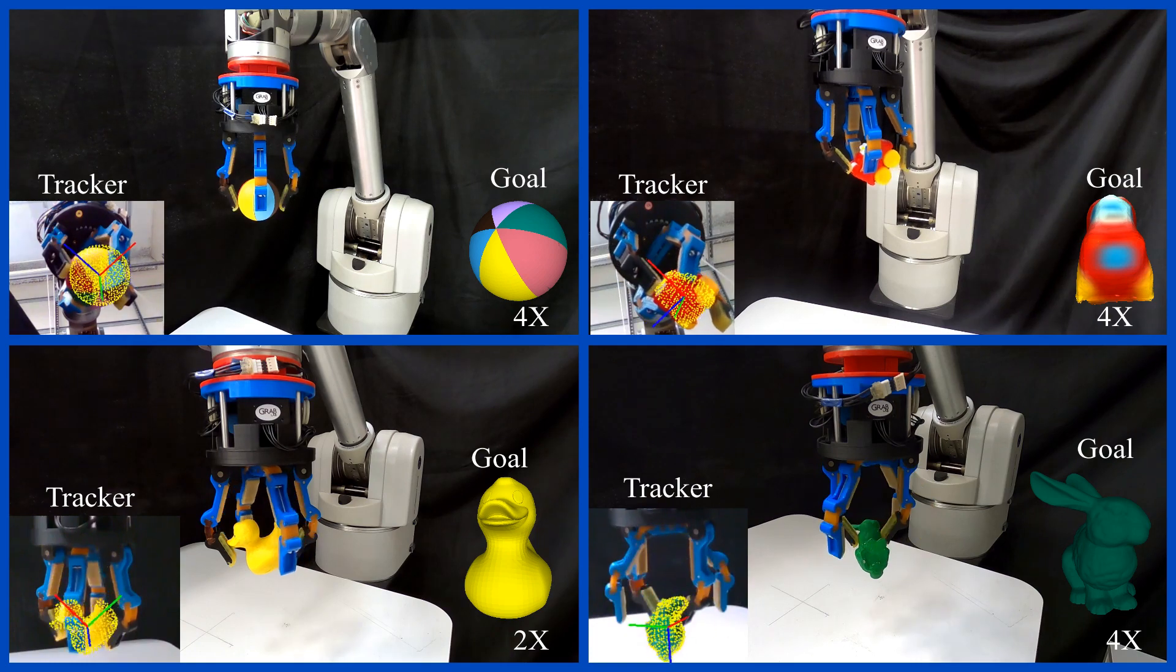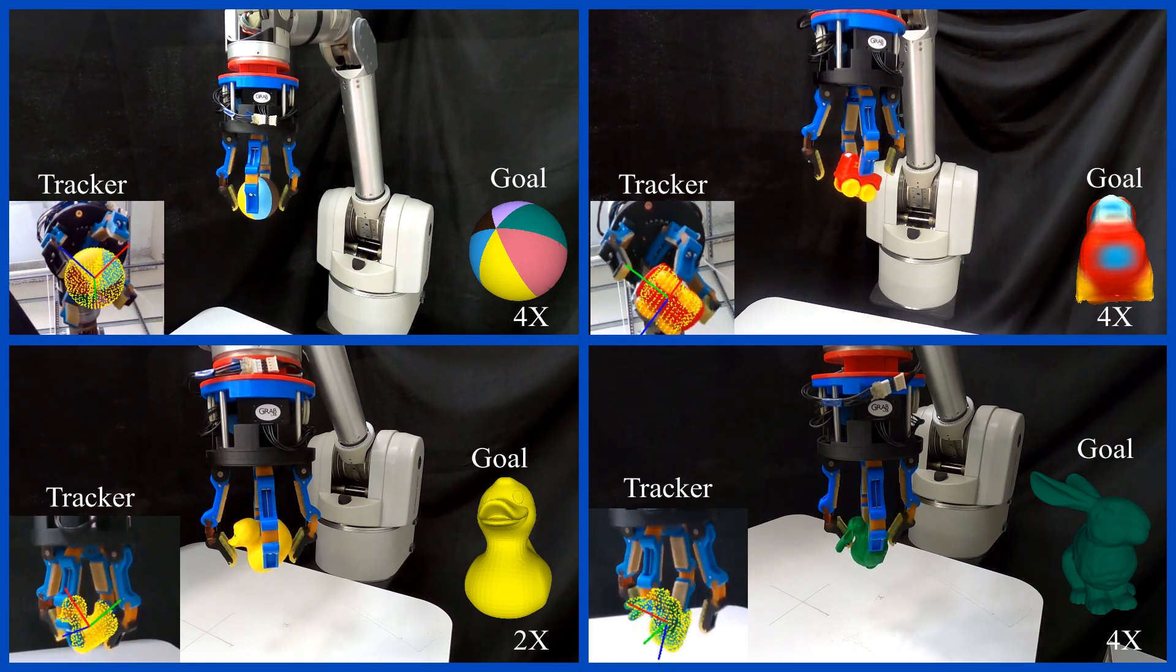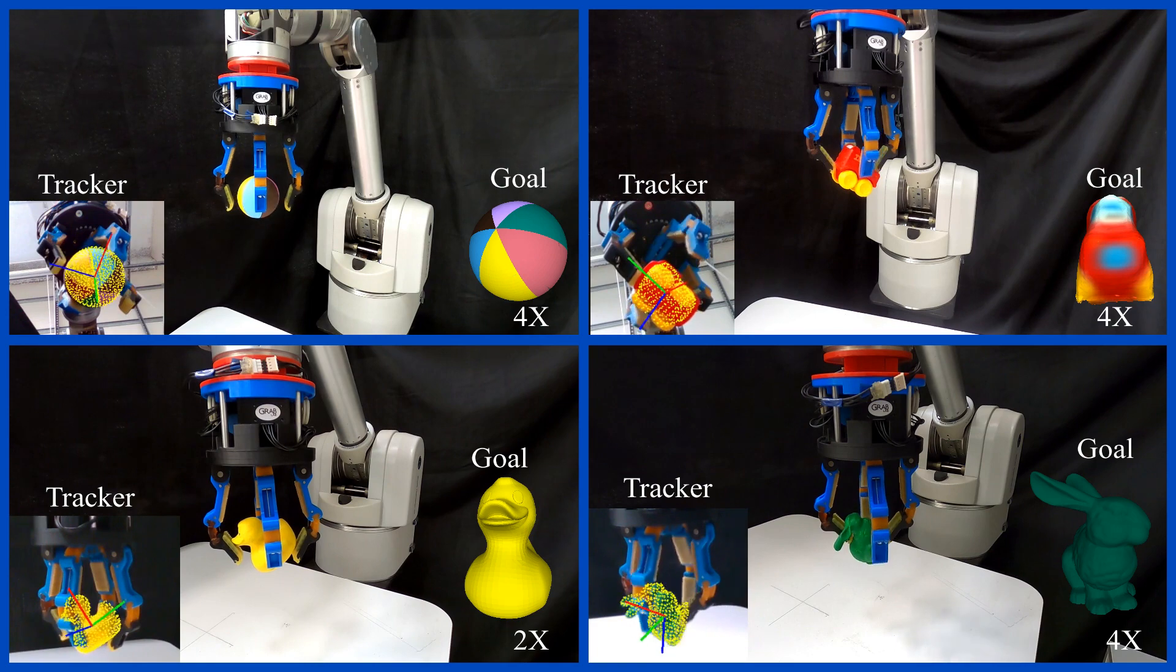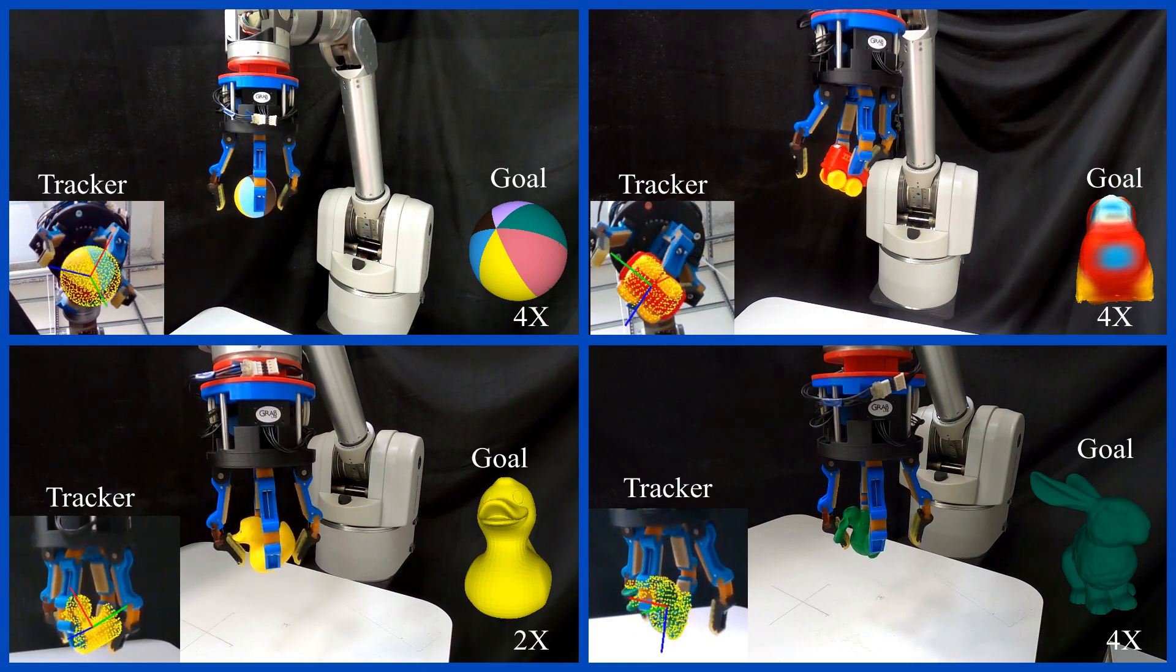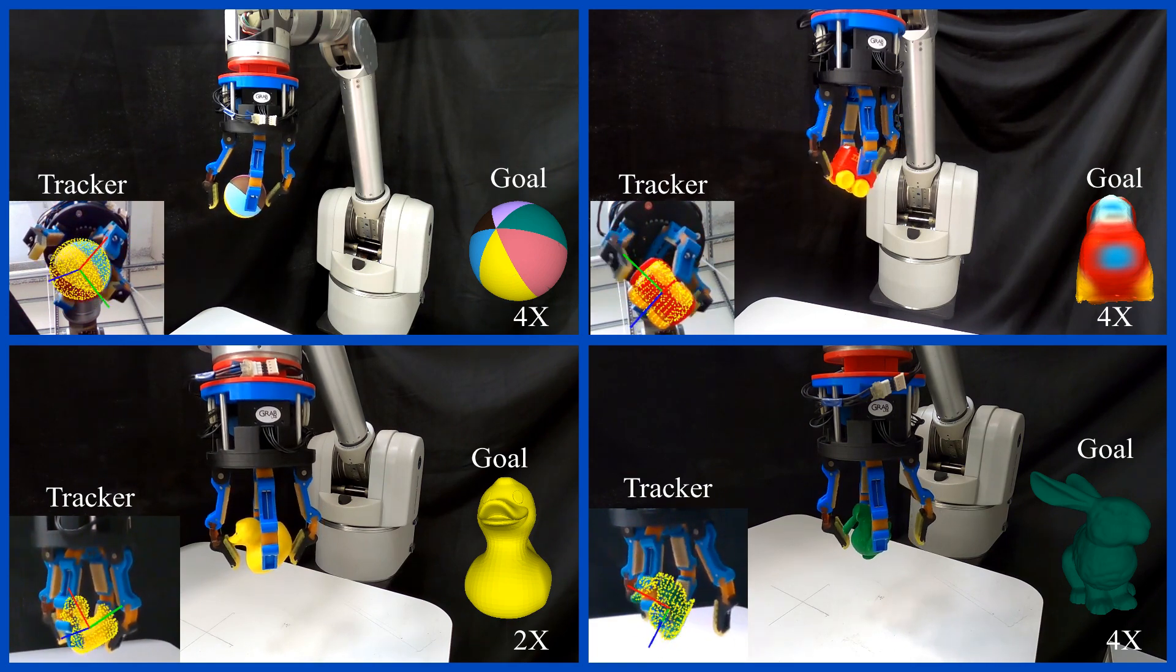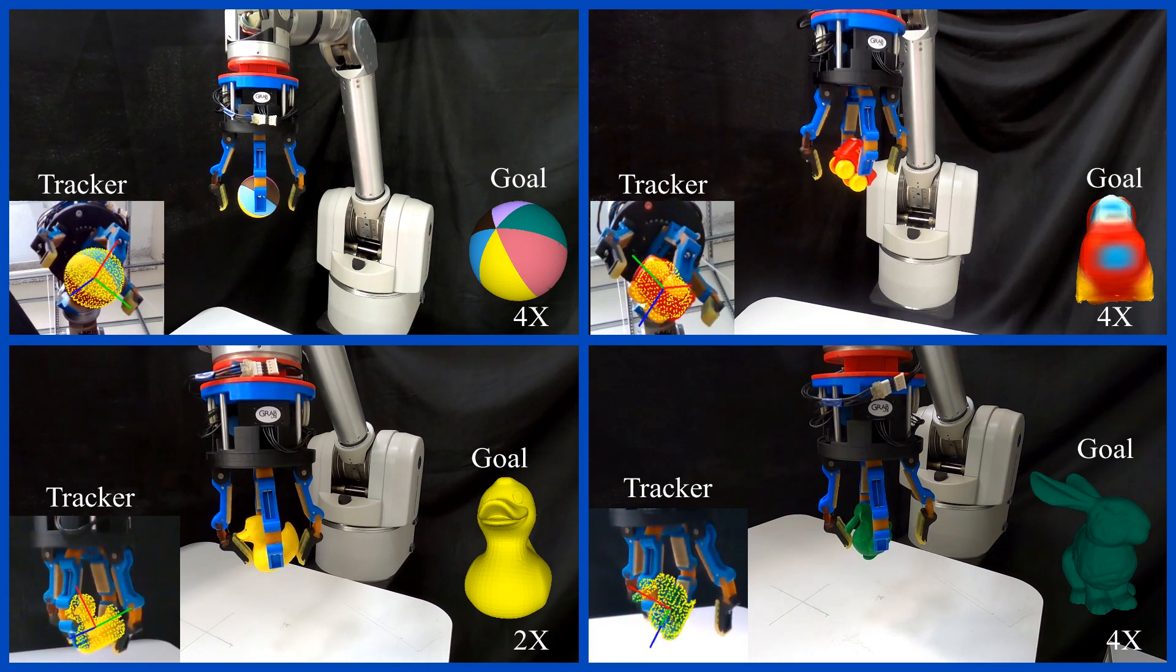And finally, we showcase the transferability of our method by manipulating different object geometries to rotational goal configurations. Namely, we focus on a multicolored sphere, a toy car, a plastic duck, and a plastic bunny.